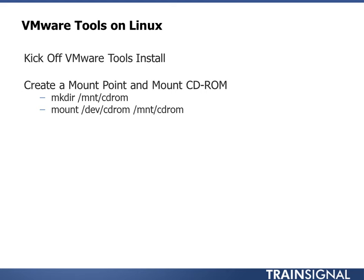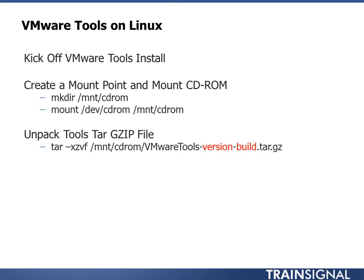Since I'm more of a Windows guy, this is where it gets a little confusing if you're not a Linux person. We're going to run some command line commands — we'll need to make a directory for the CD-ROM and then mount the CD-ROM to that directory. It won't just pop up like in Windows asking if you want to install software. We'll then unpack or unzip the file contained on the CD-ROM. Kudos to those who can remember the tar -xzvf command because I always have to look that up.